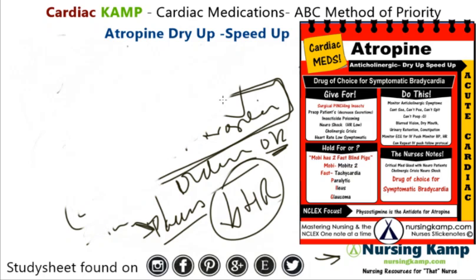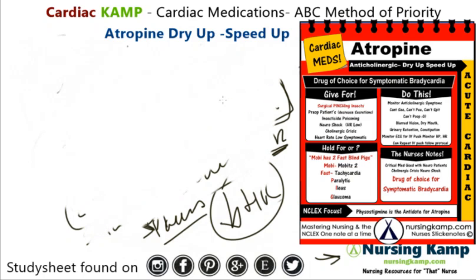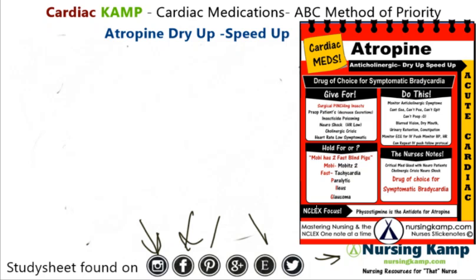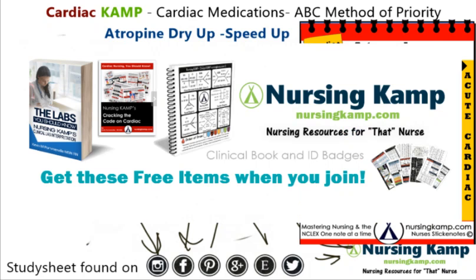To summarize: atropine is an anticholinergic — dry up, speed up. It's the drug of choice for symptomatic bradycardia and is an acute medication. Find more content from Nursing Camp on Instagram, Facebook, Pinterest, Etsy, and nursingcamp.com. You can download this sticky note off Pinterest. See you next time, nurses!